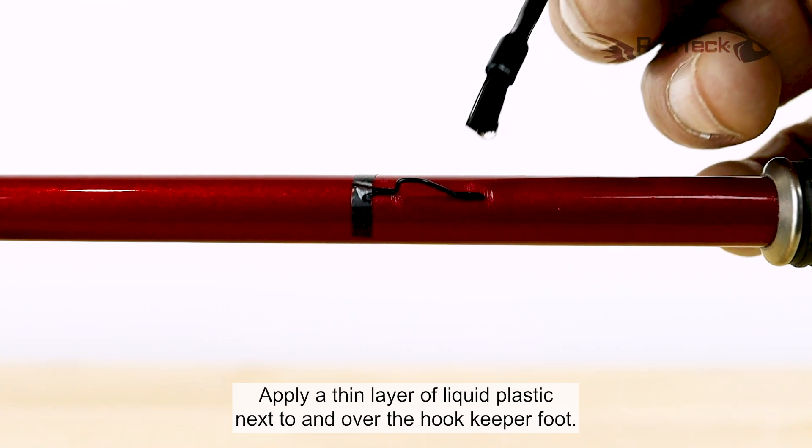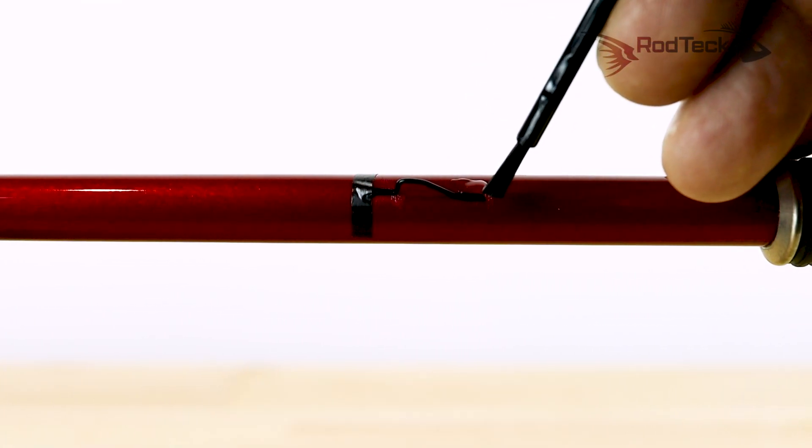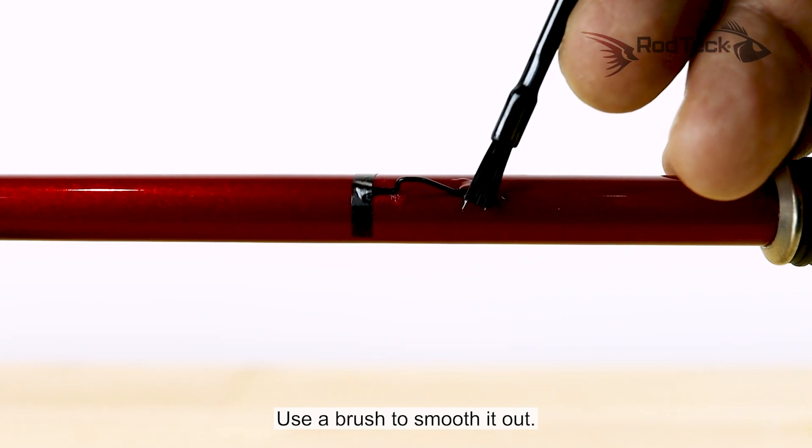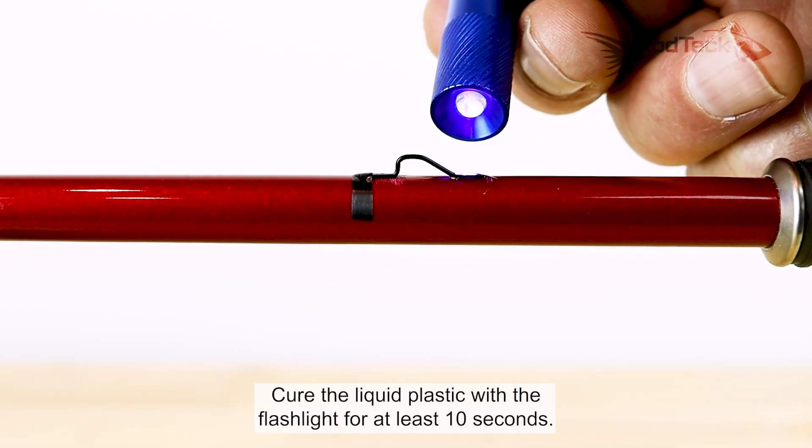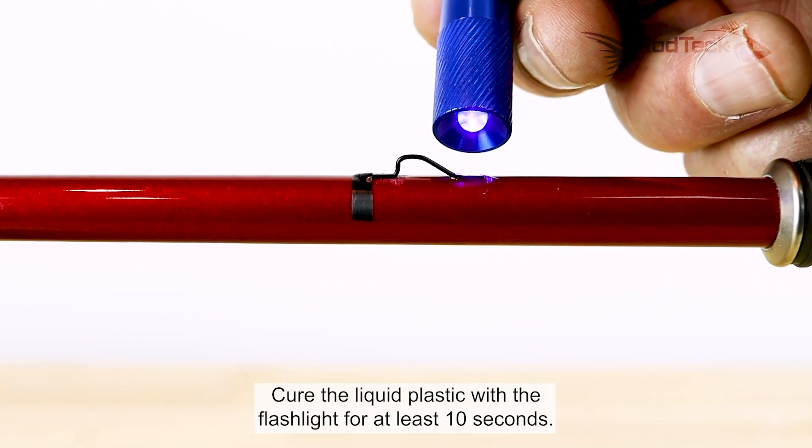Apply a thin layer of liquid plastic next to and over the hook keeper foot. Use a brush to smooth it out. Cure the liquid plastic with the flashlight for at least 10 seconds.